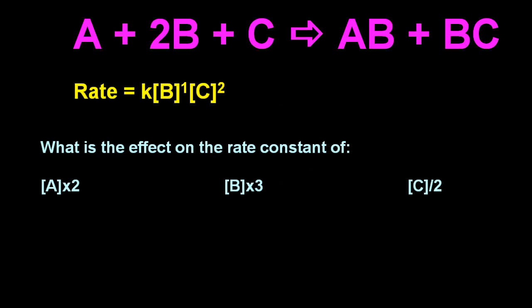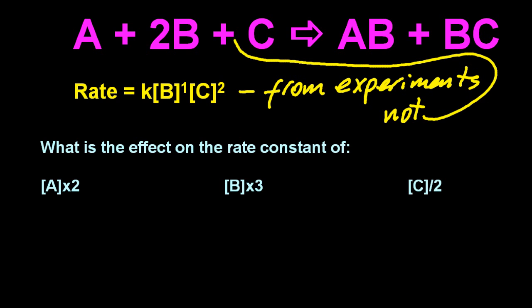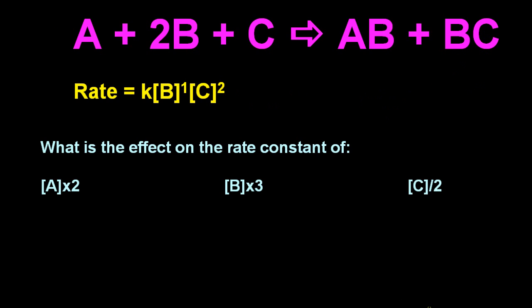Okay, the rate expression. There's an equation at the top and the rate expression's in yellow. Notice that the coefficients don't have to and probably won't equal the exponents in the rate equation. That's the equilibrium constant you're thinking of if you think the coefficient should be reflected in the equation. It's from experiments or from the mechanism if you had the mechanism. That's how you get those orders of reactions, those little exponents.